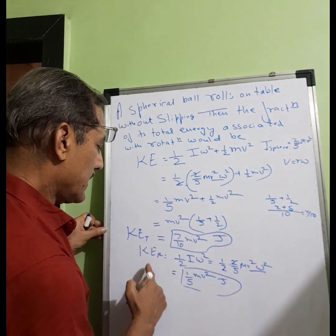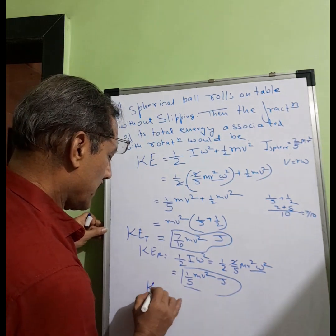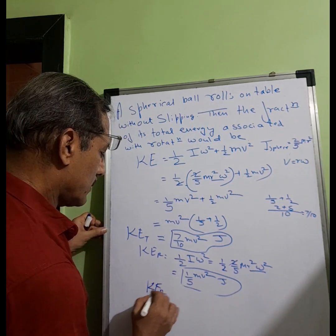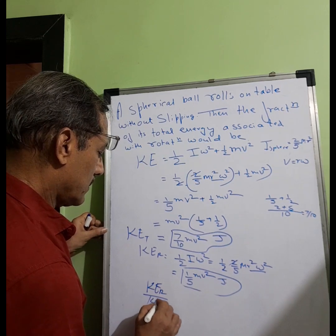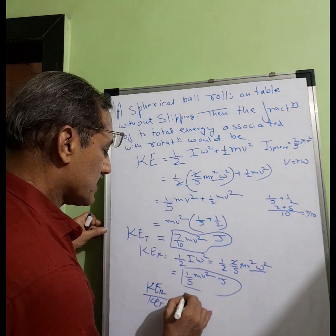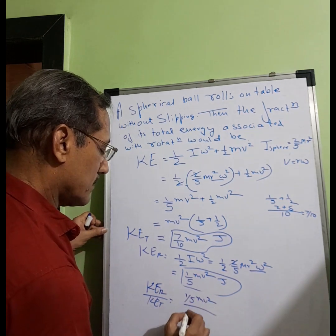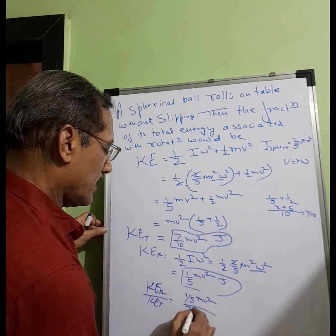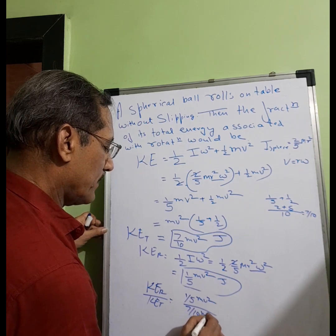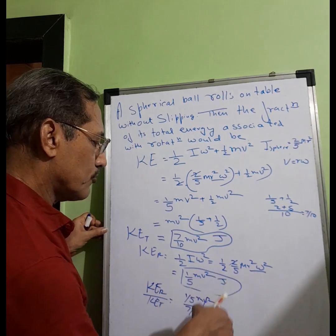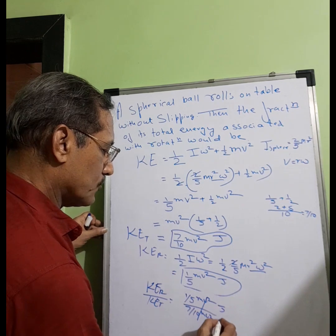So rotational is 1/5 mv² and this is 7/10 mv². So this cancels. Joules, if I write joules, this also goes away. So ultimately what do we do? Ultimately all gets cancelled.